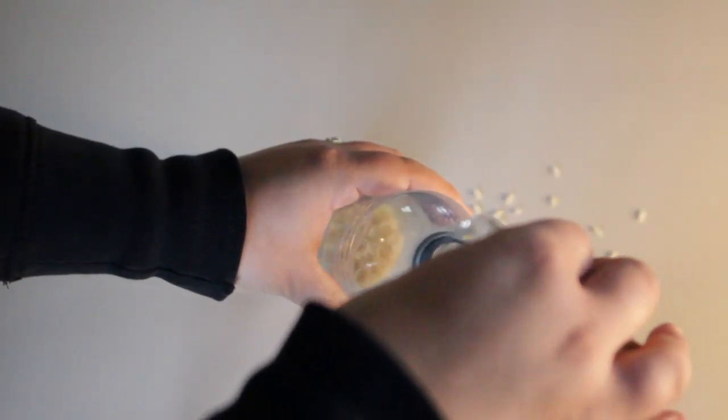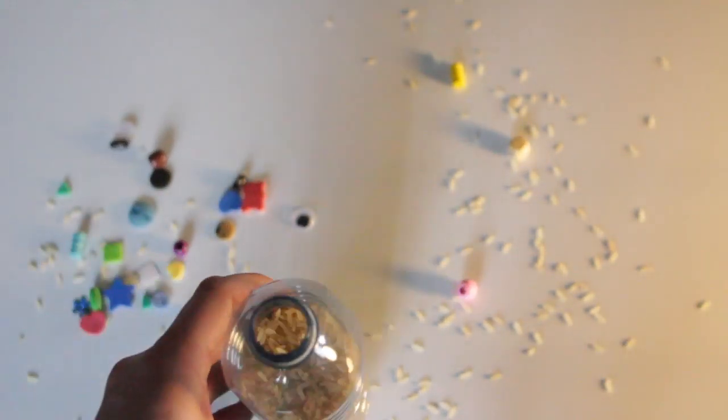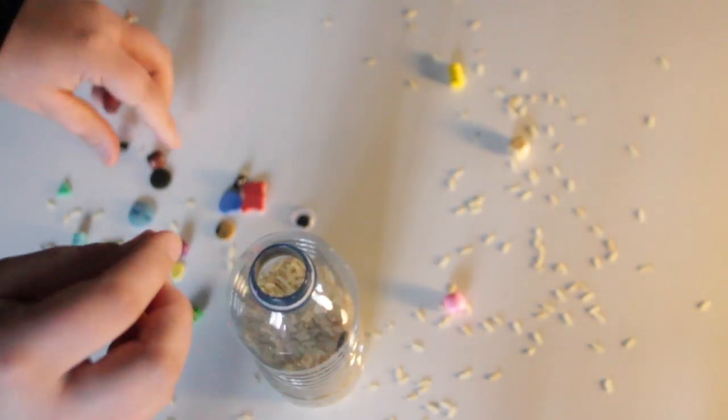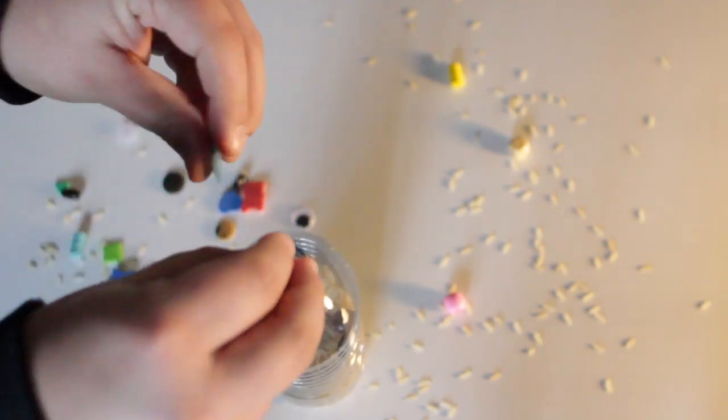Next you're gonna fill the water bottle with some rice. Then you're gonna put your little trinkets and random things you found inside the bottle.